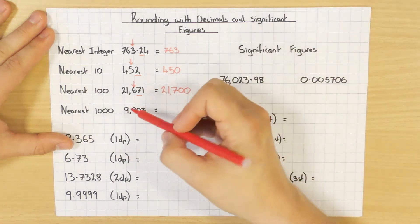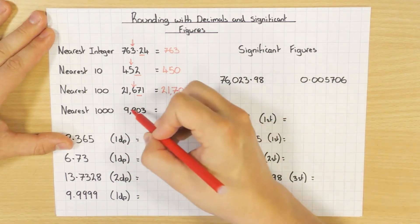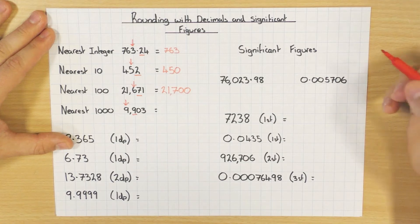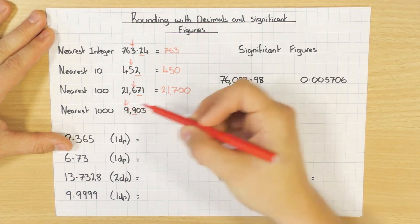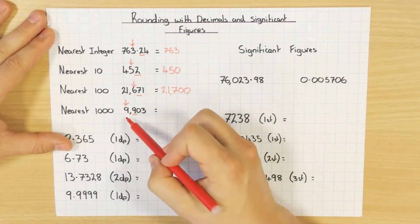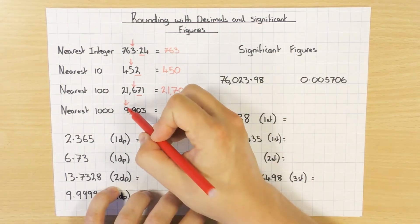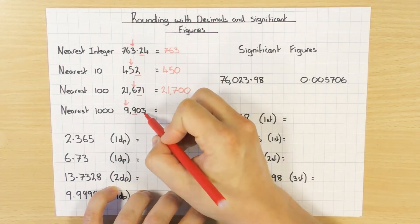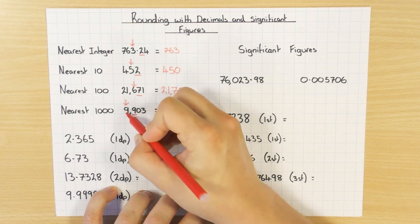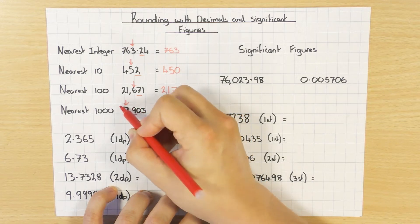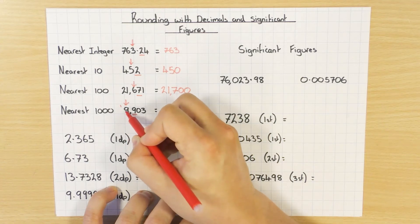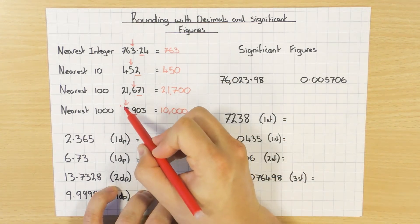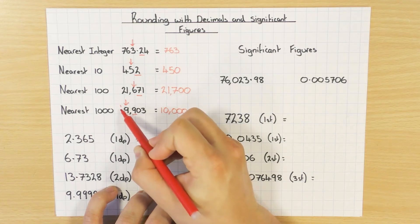Rounding to the nearest thousand: I put an arrow over the thousands column, which is the nine, and the next digit is also a nine — five or above, so I round up. Now some people just change it to a one, but that's wrong. Think of it like a column method: adding one to nine gives ten, so that digit becomes zero and I carry one over. The next digit also becomes zero, and I carry again, giving 10,000.